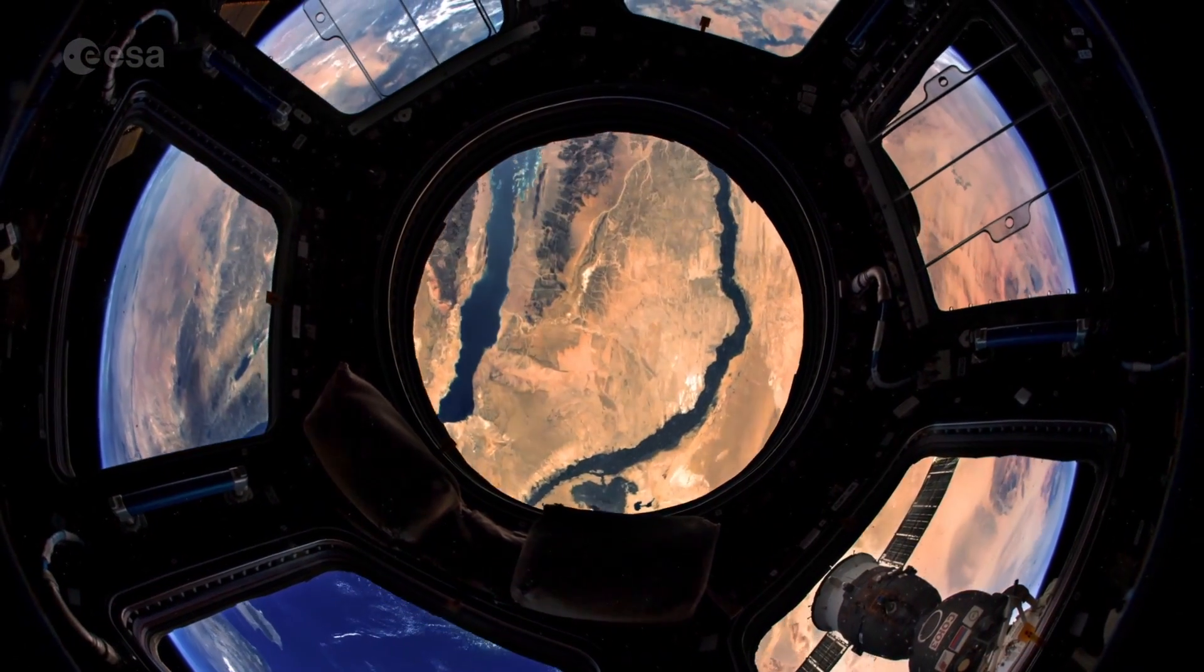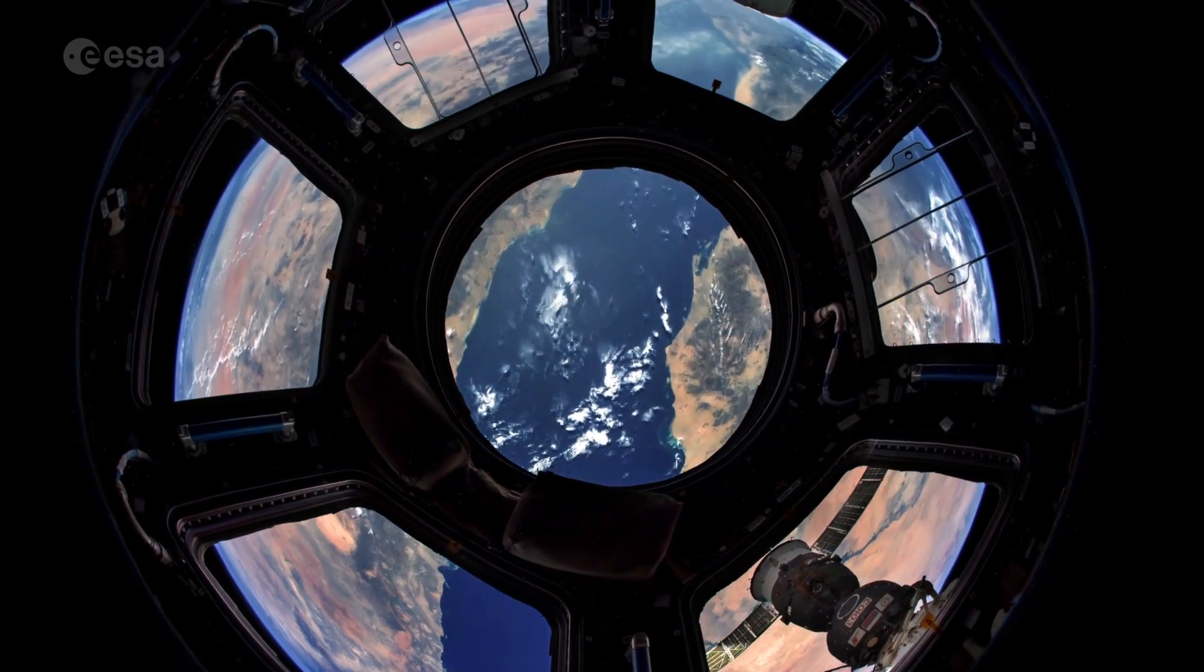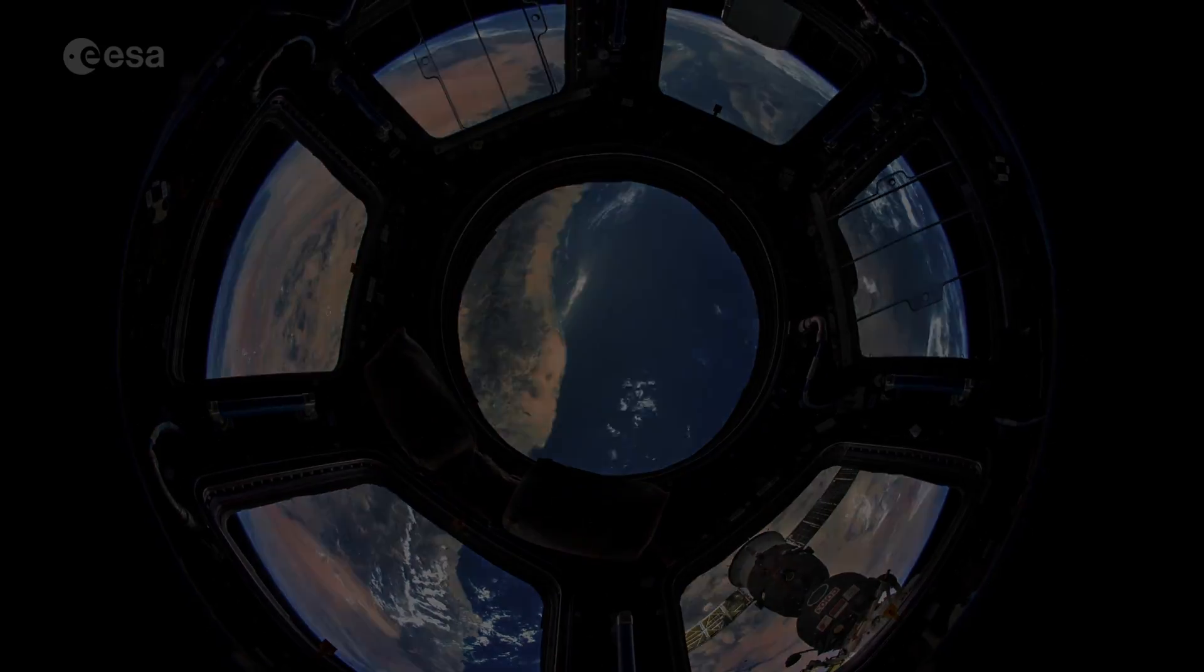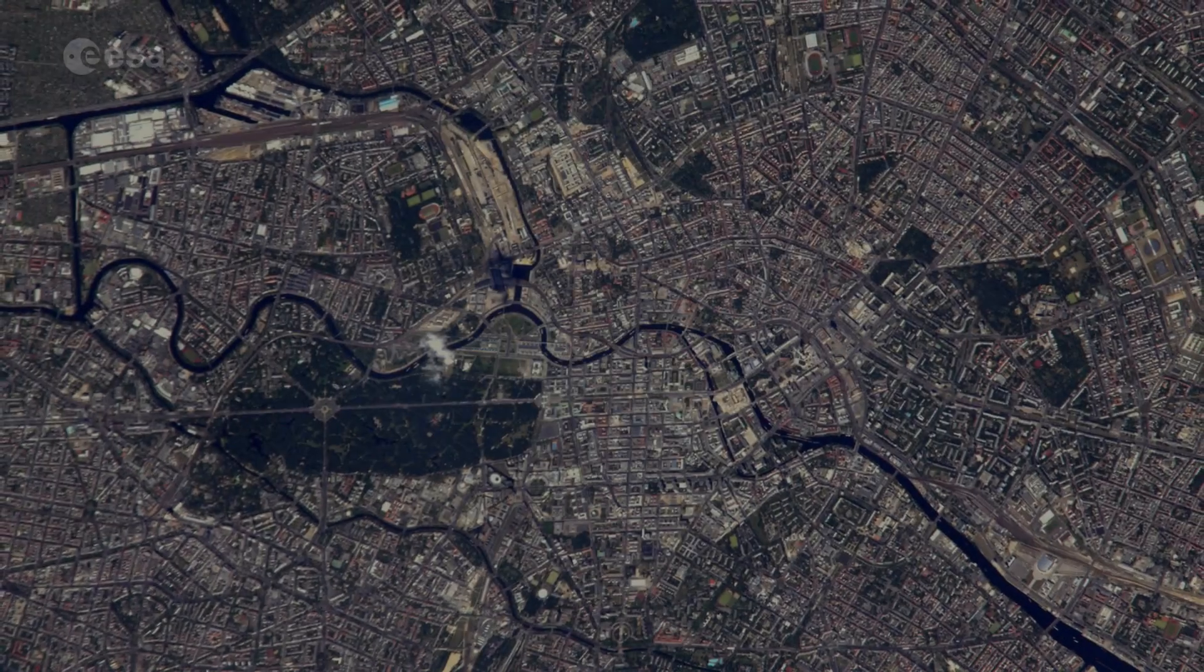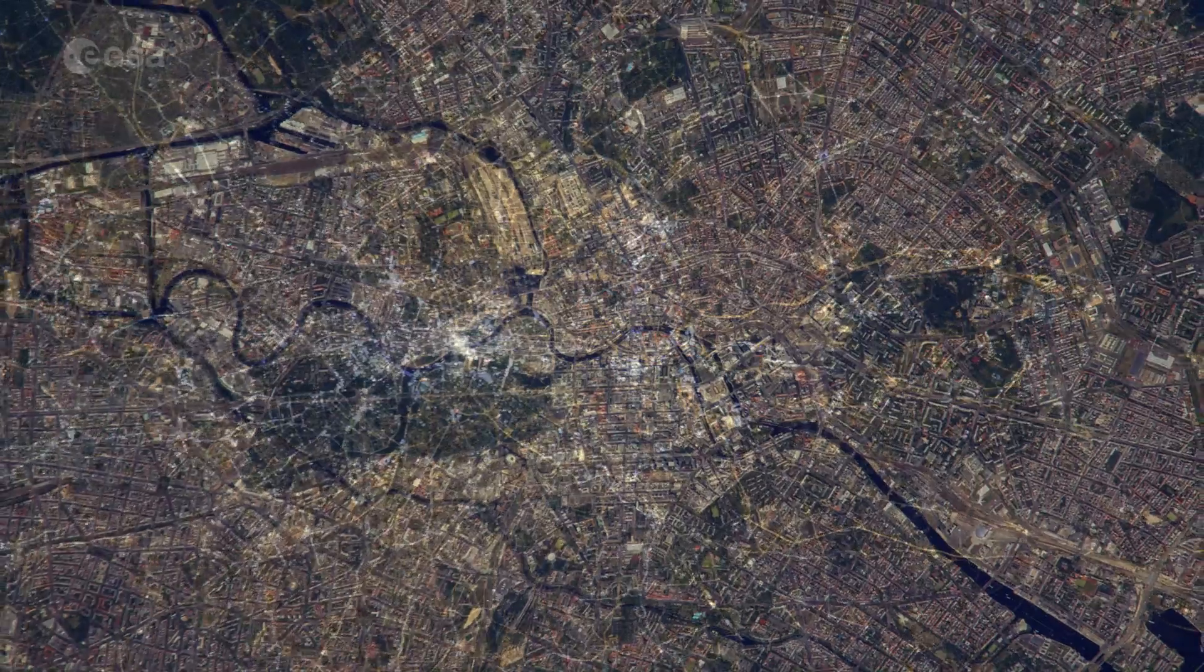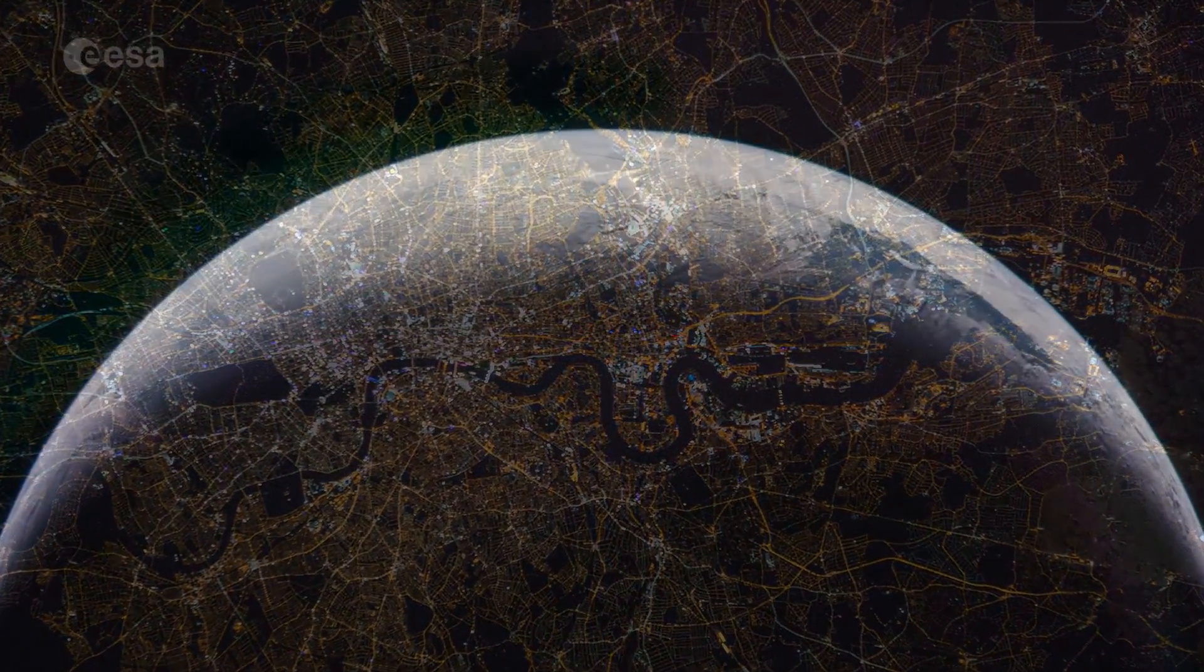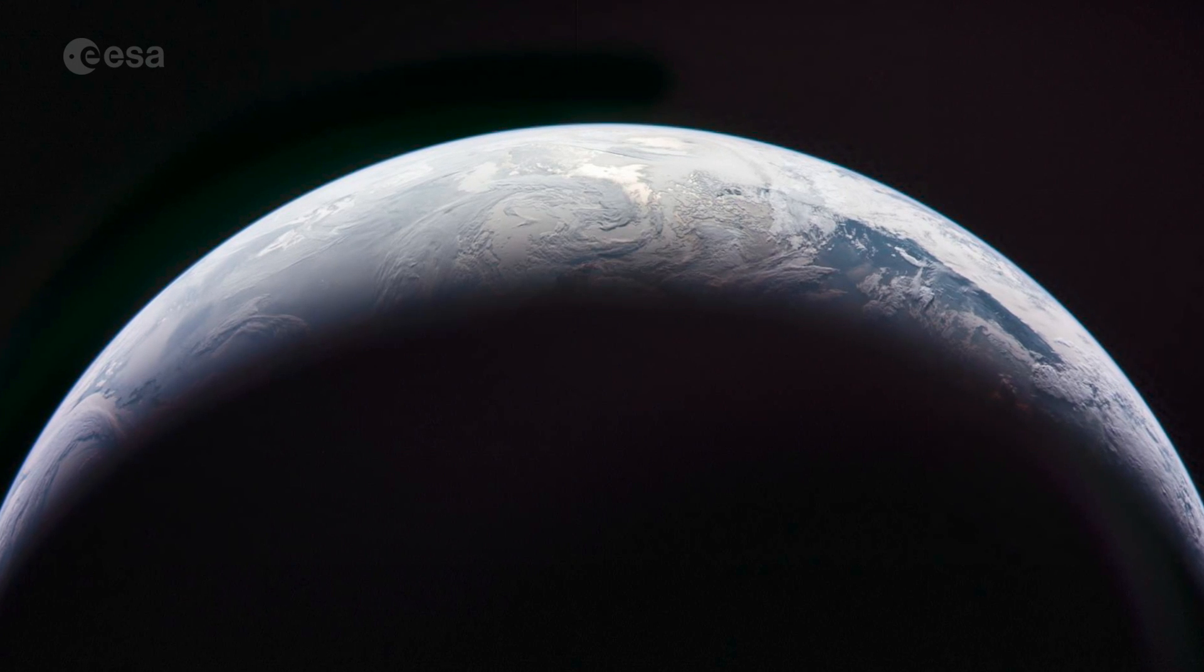When we see the Earth from space, we see ourselves as a whole. We see the unity, and not the divisions. It is such a simple image, with a compelling message: one planet, one human race.